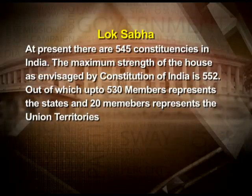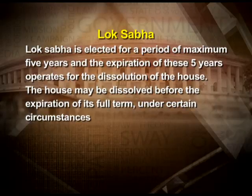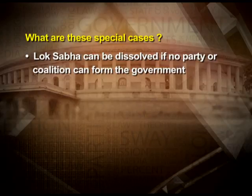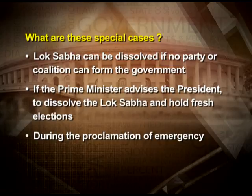One representative is elected through each constituency. At present there are 545 constituencies in India. The maximum strength of the house as envisaged by the Constitution is 552, out of which up to 530 members represent the states and 20 members represent union territories. Lok Sabha is elected for a maximum period of 5 years, after which the house is dissolved. The house may also be dissolved before its full term under certain circumstances — for example, if no party or coalition can form the government, if the Prime Minister advises the President to dissolve the Lok Sabha, or during the proclamation of emergency.